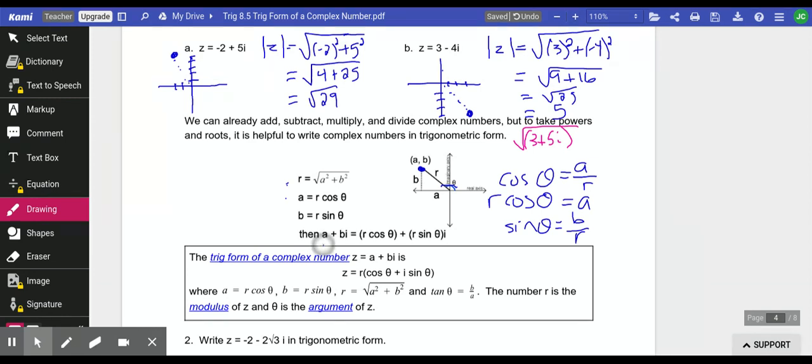We can rewrite a plus bi, replace that a with r cosine theta, and replace the b with r sine theta. This is called the trig form of a complex number because it writes our complex number in terms of the radius and the angle. That's something you're going to need to know. That's here in this box. The trig form of a plus bi is r cosine theta plus i sine theta. The only difference is we factored the r out.